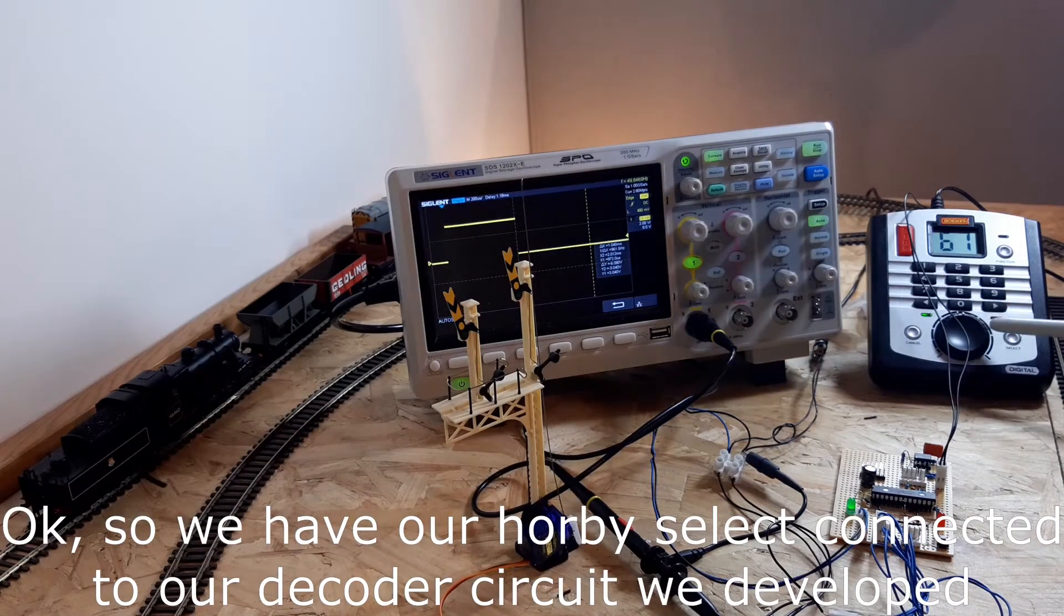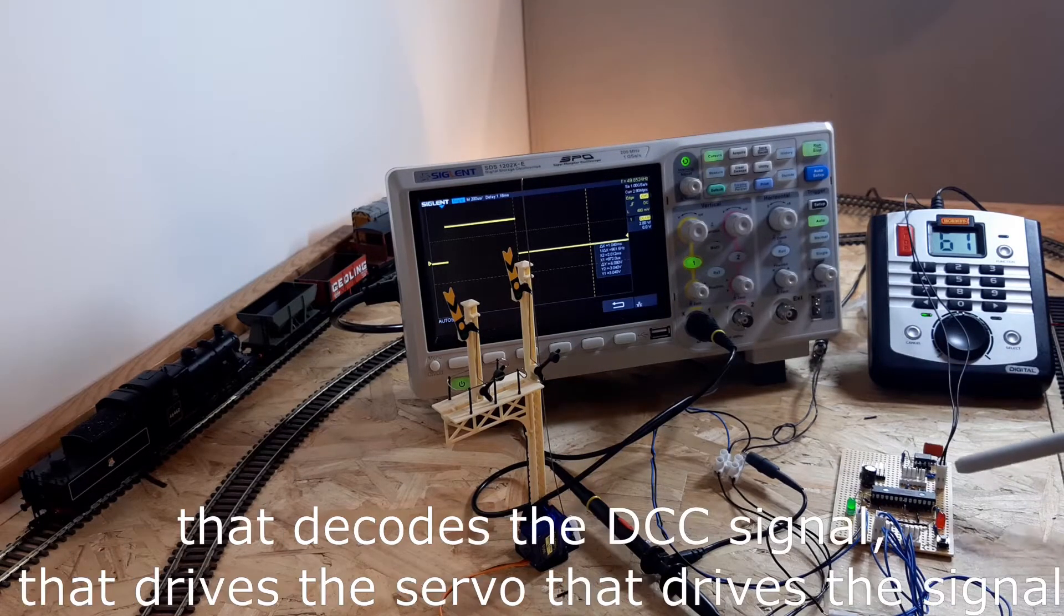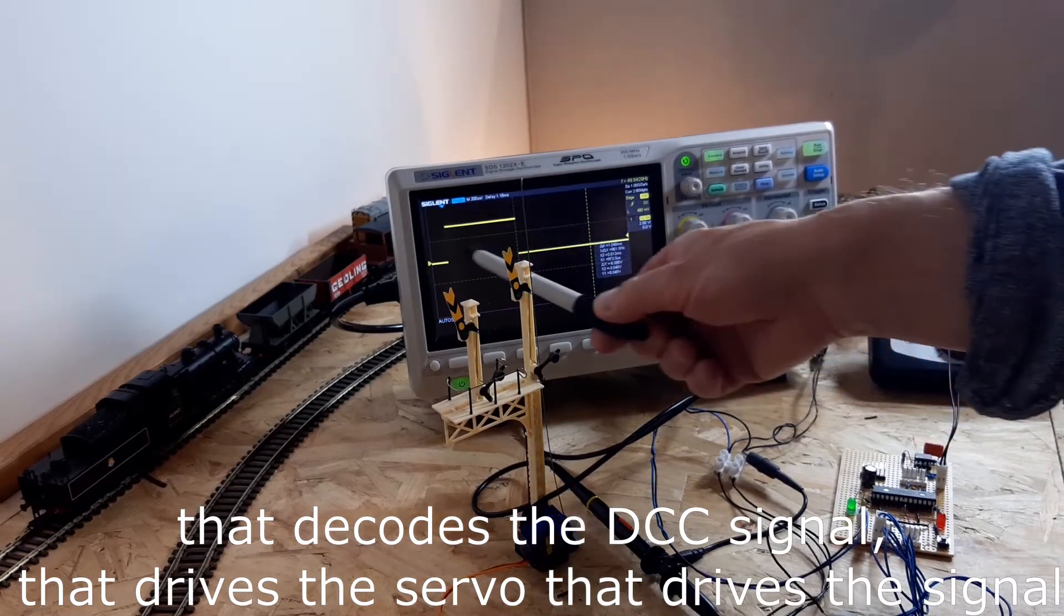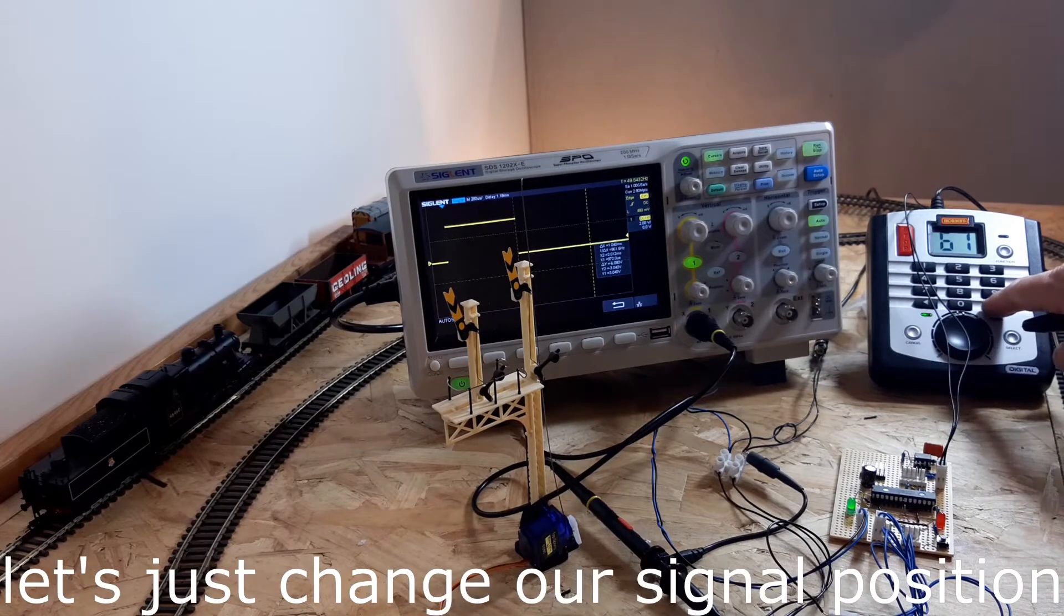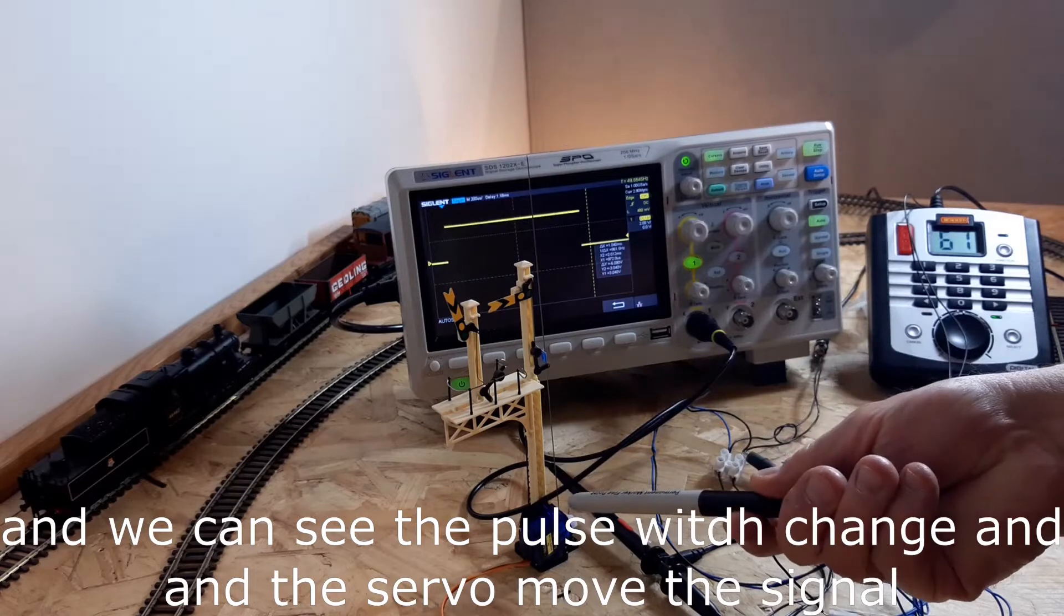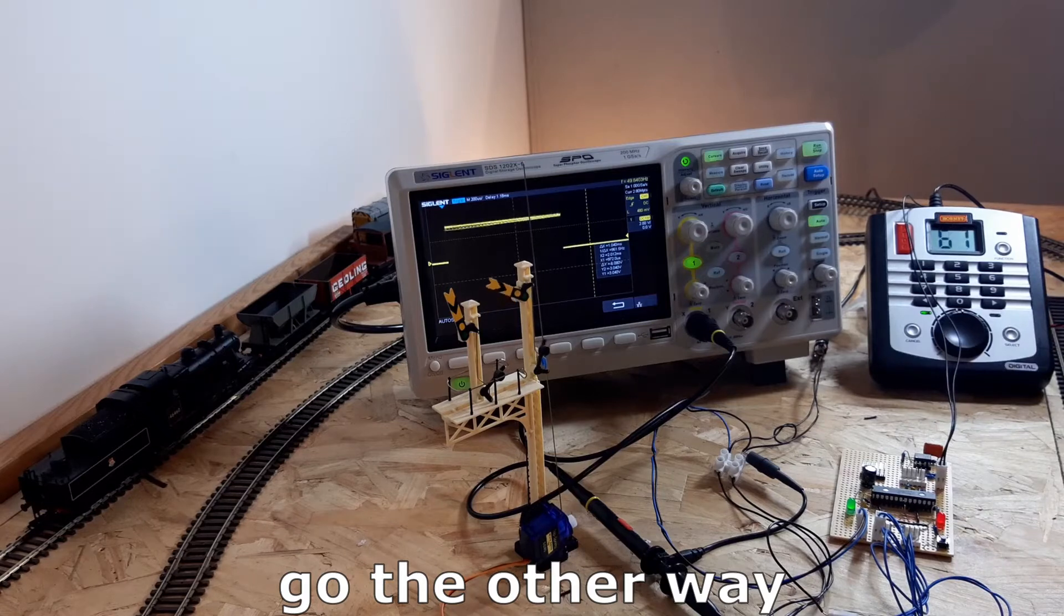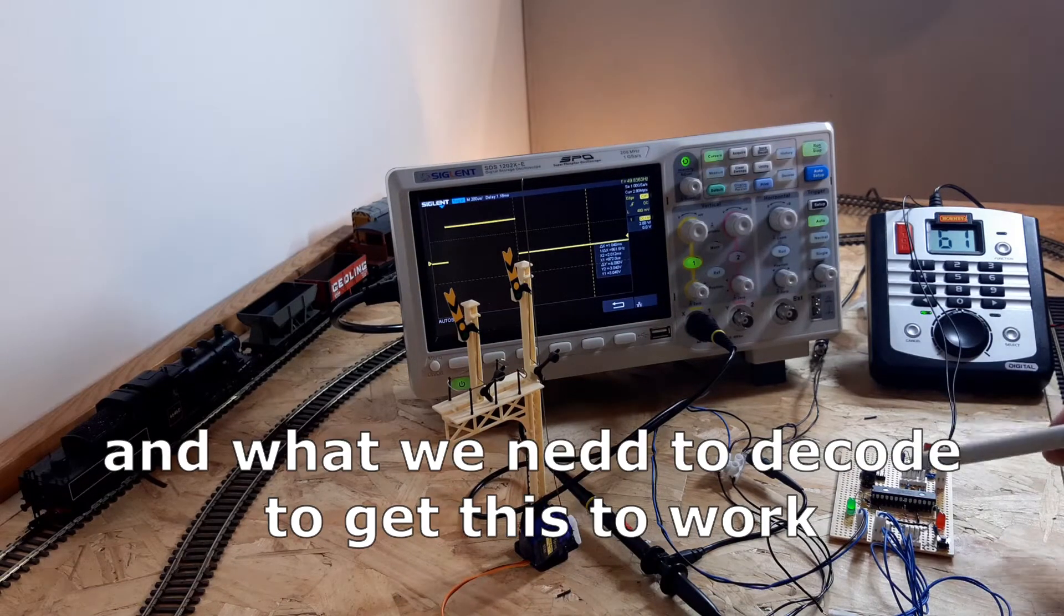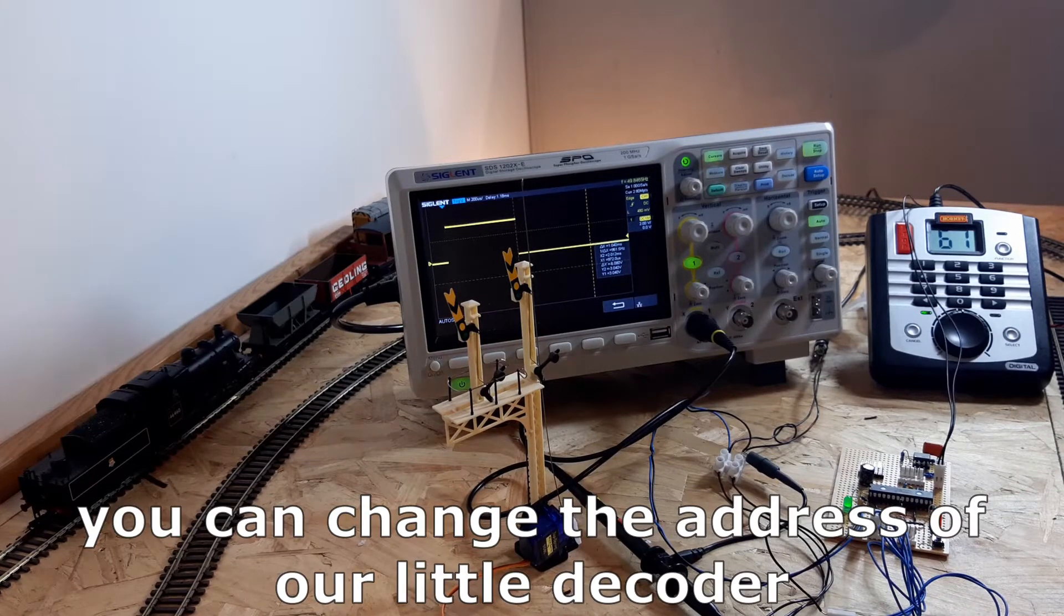Okay, so we have our Hornby Select connected to our decoder circuit that we developed. This decodes the DCC signal, then drives the servo here which drives the signal. There's a servo pulse width that we generate from here. Let's just change our signal position and you can see the pulse width change and the servo moves the signal. In this video we're going to look at what codes are sent out and what we need to decode to get this to work, including addressing. We can address and change the address of our little decoder.